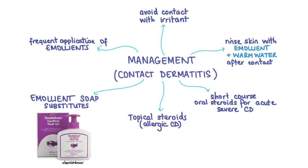Moving on to management: advise the patient to avoid contact with the irritant, for example use gloves, and rinse skin with warm water and an emollient as soon as possible after coming into contact with the allergen or irritant. Emollients and emollient soap substitutes should be prescribed, with advice to apply copious amounts as frequently as possible. Topical steroids can be prescribed for allergic contact dermatitis, and it may be necessary to prescribe short courses of oral steroids for acute severe episodes.